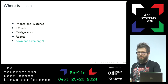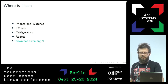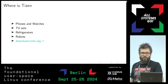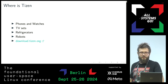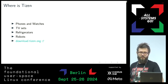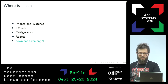Where can we find Tizen? There were some phones — not very successful. Some watches, noticeably more successful, but Tizen was eventually replaced with Wear OS. TV sets, quite successful. And refrigerators. Some robot platforms were developed too, but as far as I know those weren't consumer products.